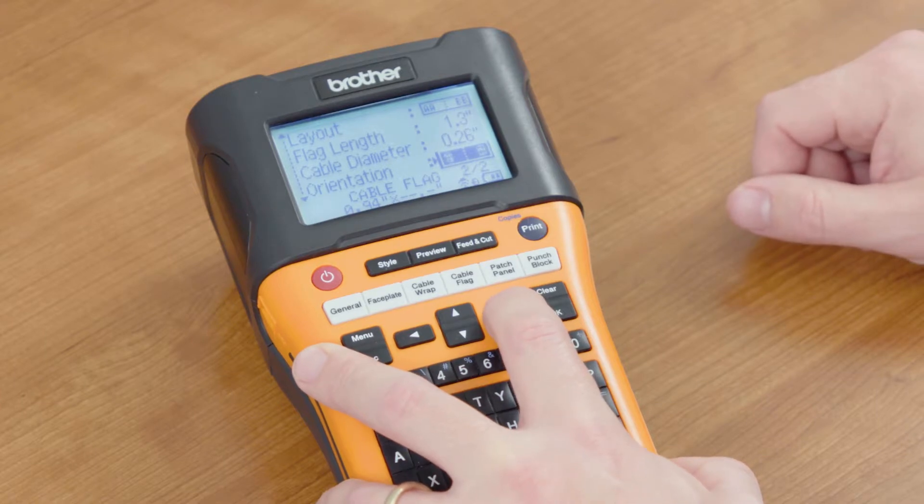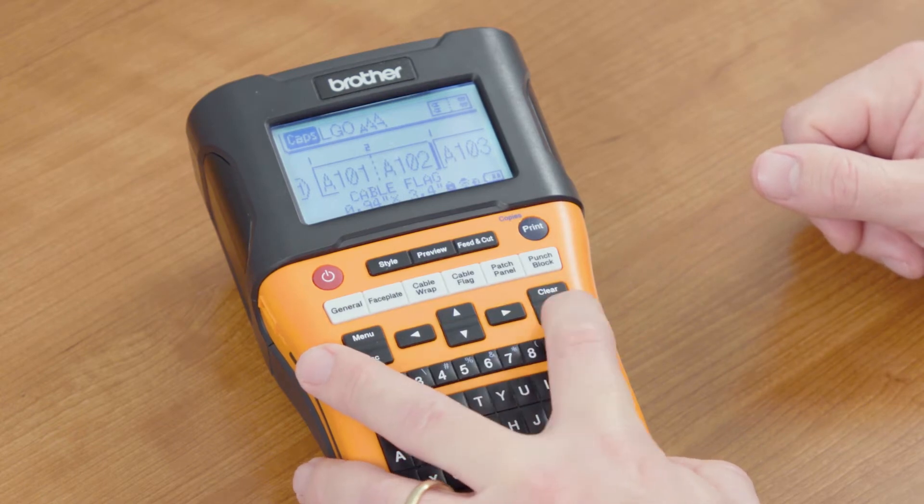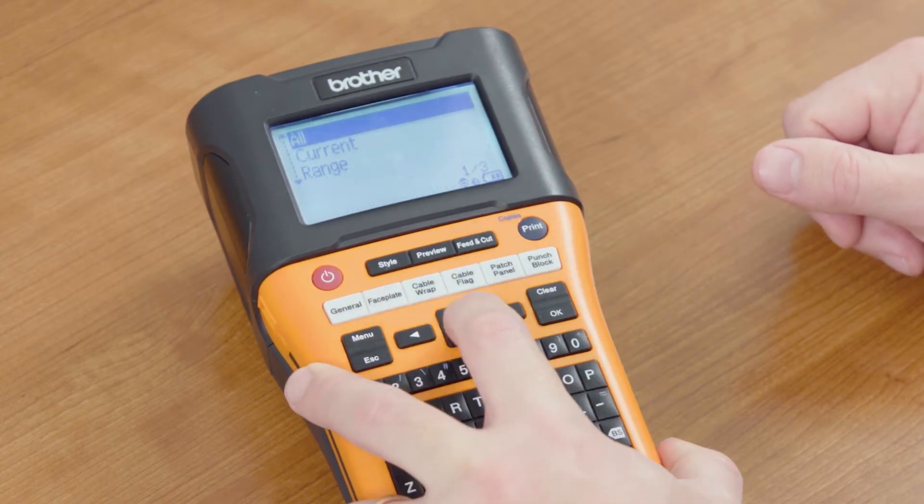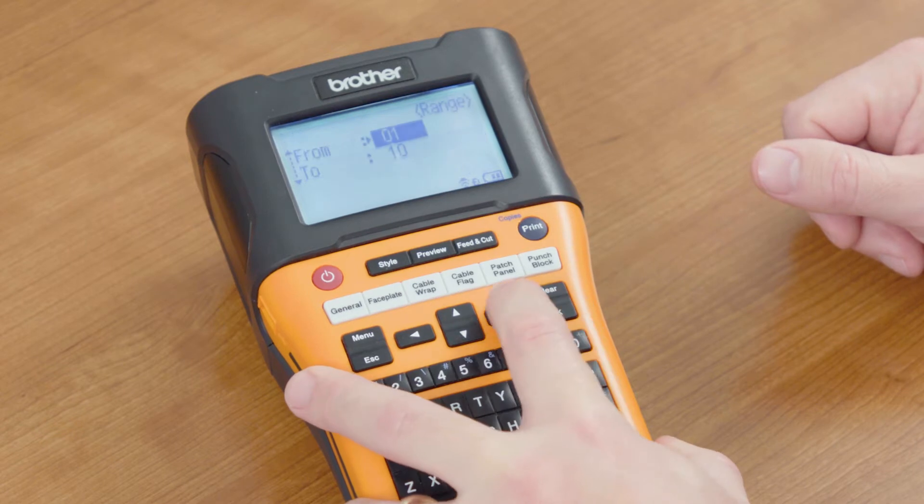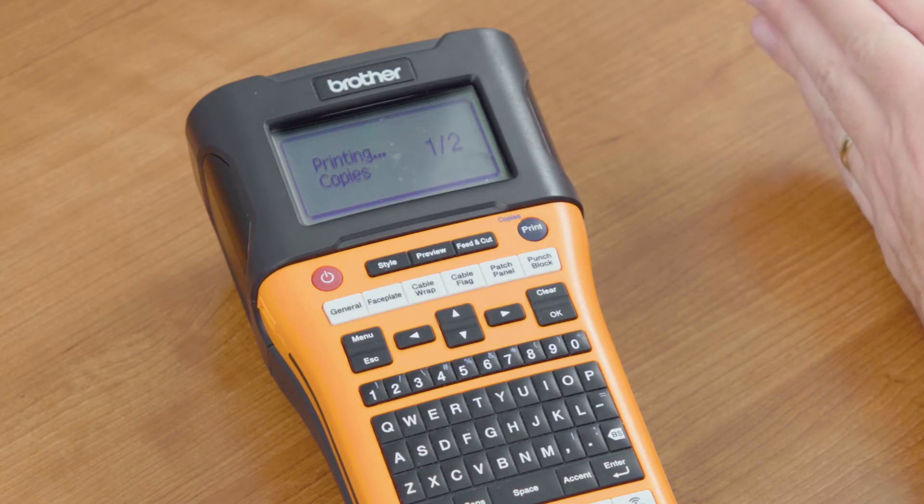So we'll select this information here, change that and select OK. For this example, we'll go ahead and print two of these labels by selecting print, go down to range, we'll just say from 1 to 2 to get a good example of what we did on this.